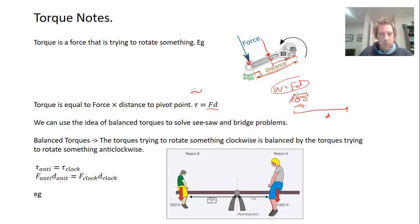This funny T here, I draw it with a squiggly line and then curl like that. That's the Greek letter tau, τ, the symbol for torque. We can use this idea to solve seesaw and bridge problems. We're going to do seesaw problems today and bridge problems tomorrow.